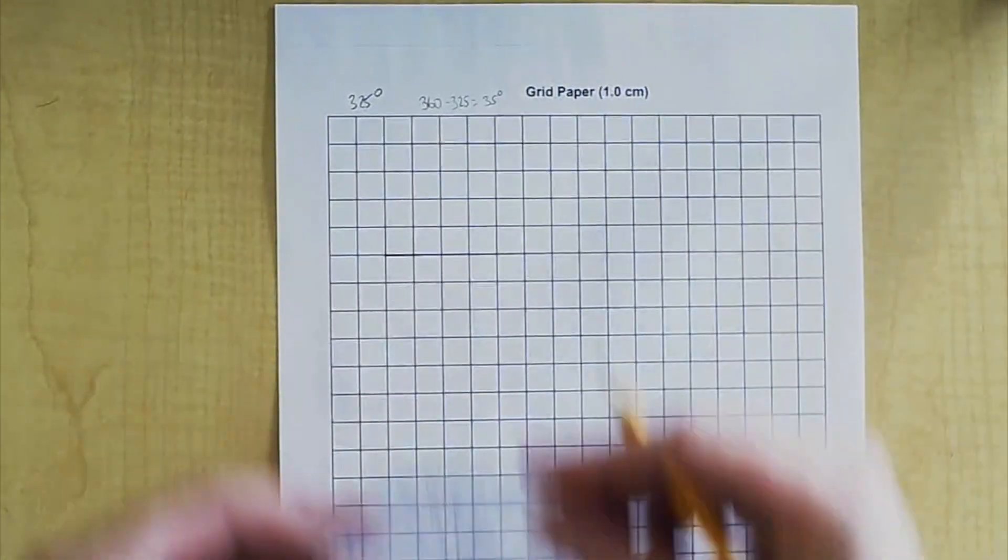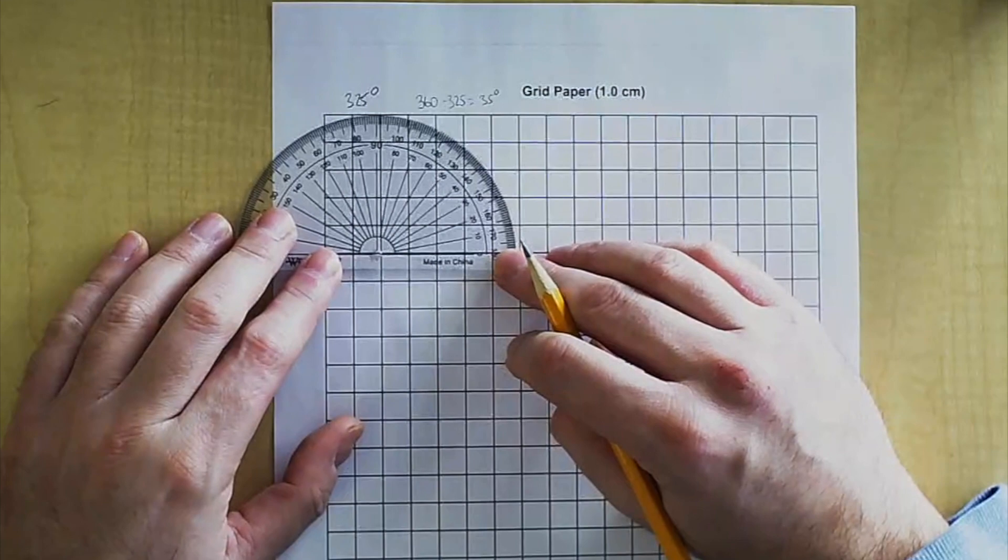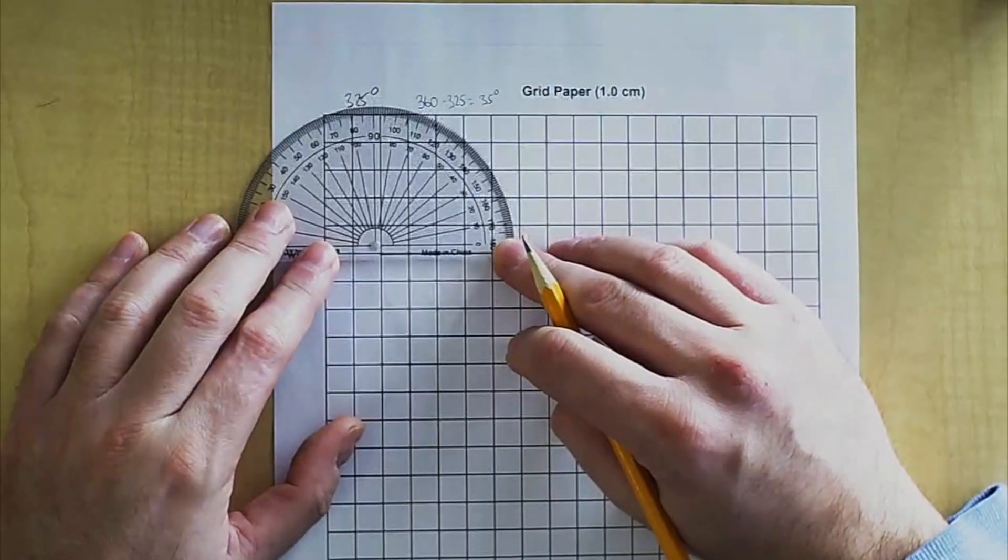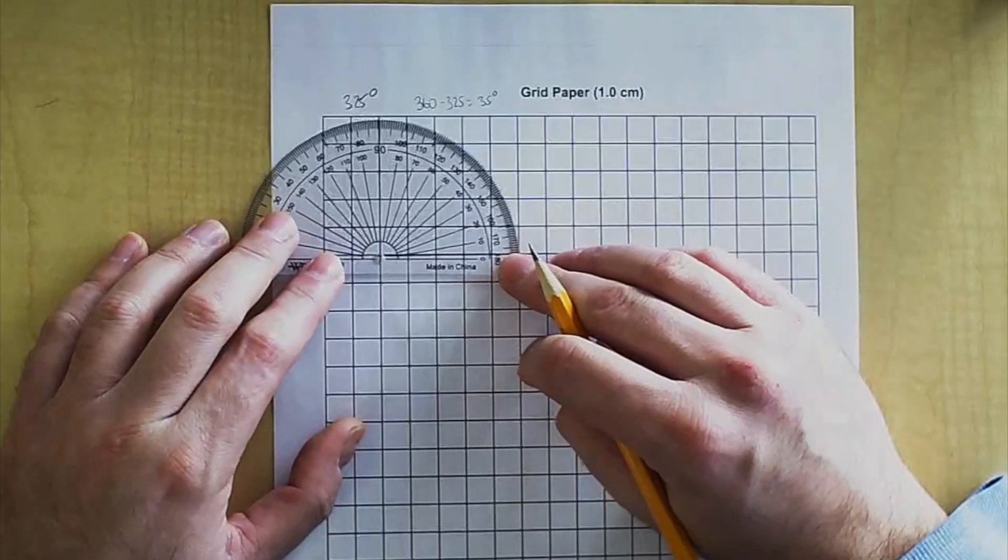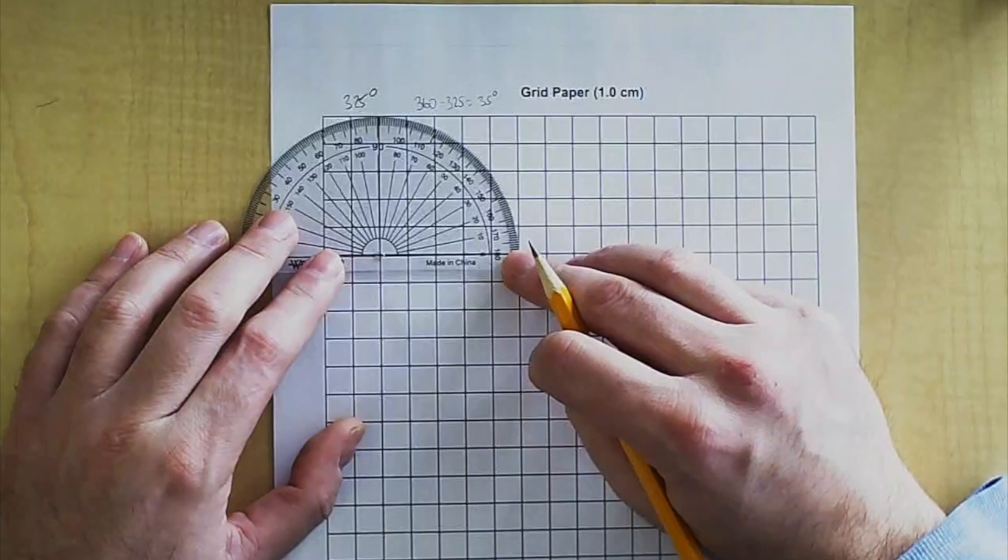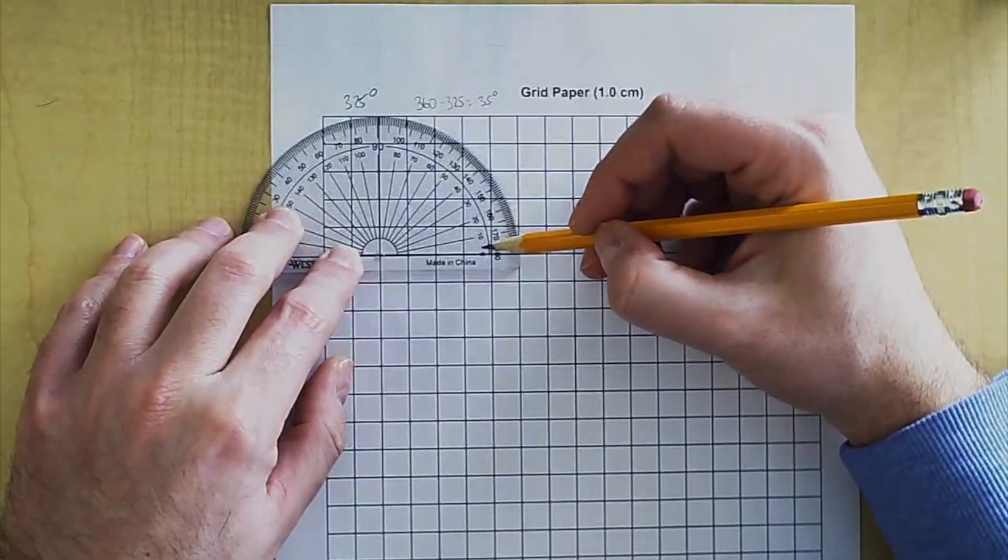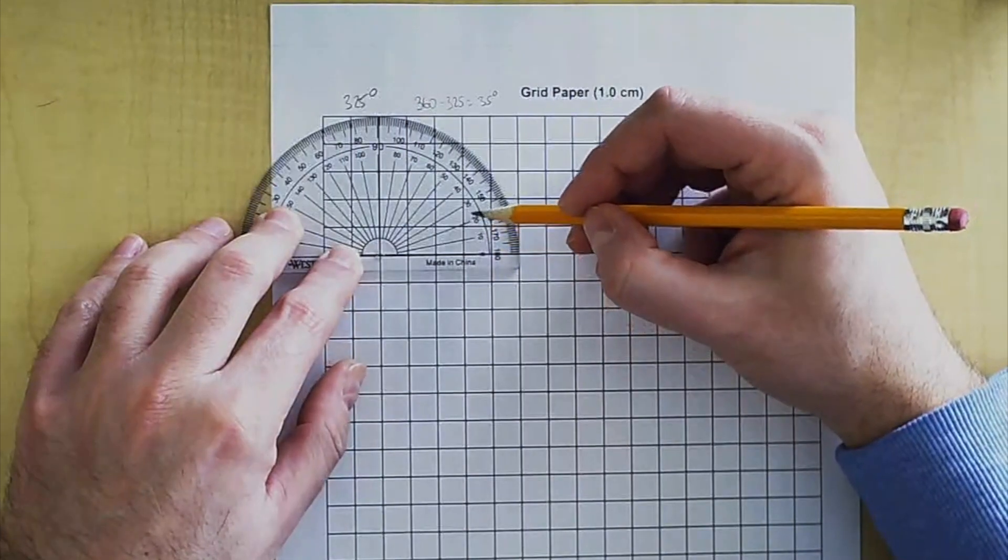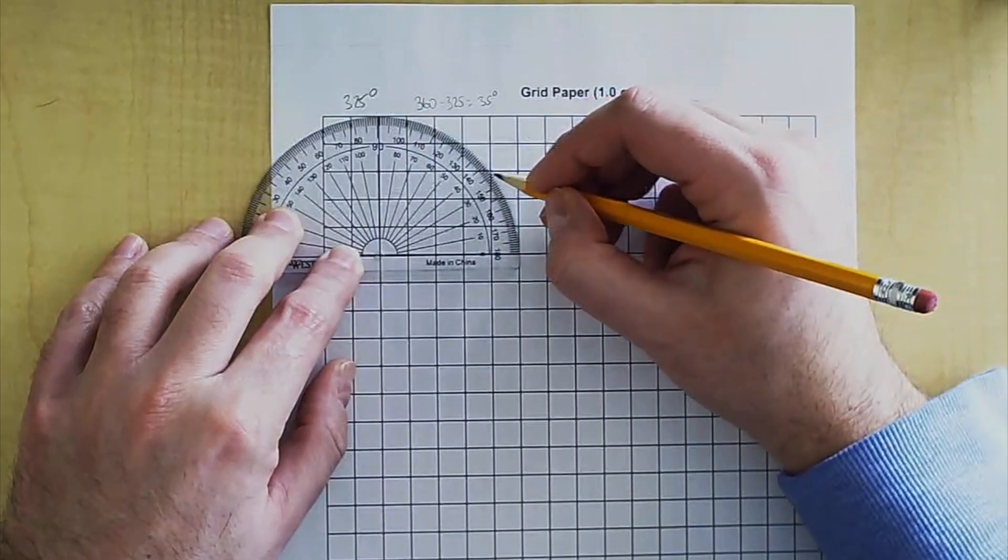So now you have to draw a 35 degree angle. Take the bottom part of the protractor and the line that you just drew and line it up with zero. The end has to go right in the center. Find 35 degrees, which is going to be the numbers here on the inside if we're doing it on the right side, and it's right here.